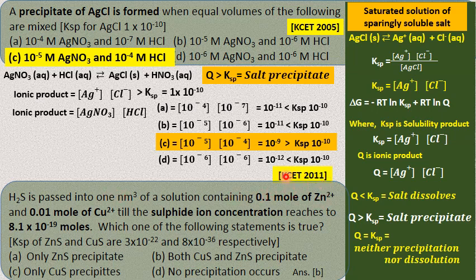There is another problem from 2011 on Ksp. H2S is passed into 1 L of solution containing 0.1 mol of Zn²⁺ and 0.01 mol of Cu²⁺ until the sulfide ion concentration reaches 8.9 × 10⁻¹⁹ mol/L. Which statement is true? Ksp of ZnS and CuS are 3 × 10⁻²² and 8 × 10⁻³⁶ respectively. Again, Q must be greater than Ksp for precipitation.